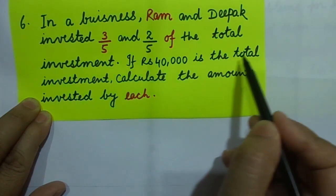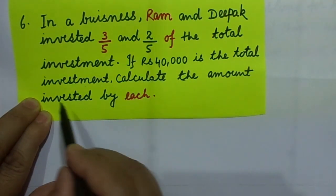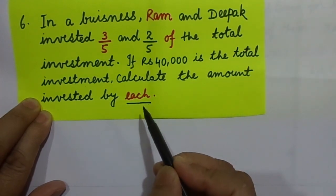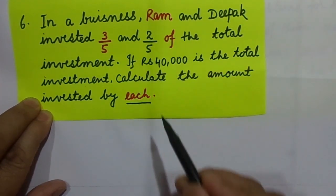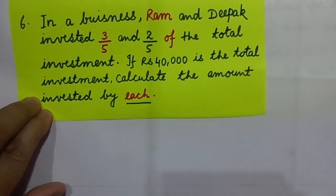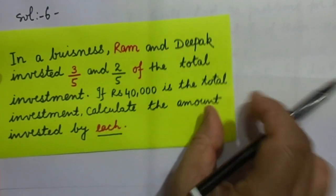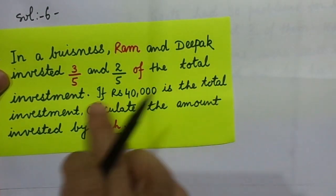If forty thousand is the total investment, calculate the amount invested by each. So we are going to find the amount invested by each of them, that is Ram as well as Deepak. Let's start. What matters here is your presentation. If your presentation is not proper, then naturally you will be at a great loss. In a business, Ram and Deepak invested three by five and two by five of the total investment.